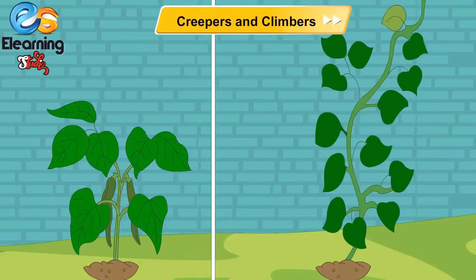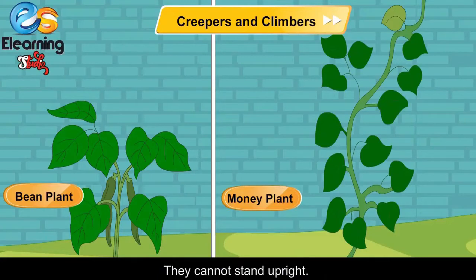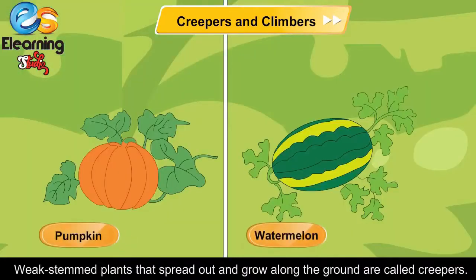Creepers and Climbers: Some plants have very thin and weak stems. They cannot stand upright. They are called climbers. They attach themselves to walls, sticks or other plants. Weak stemmed plants that spread out and grow along the ground are called creepers.